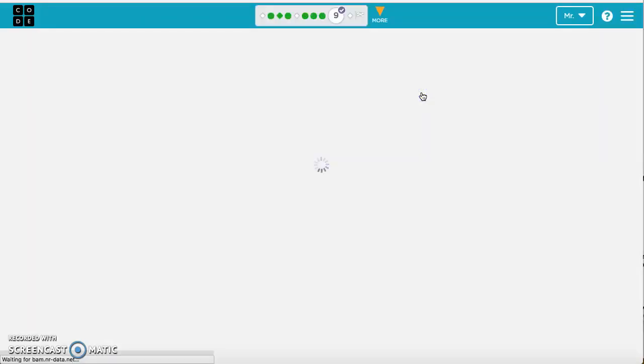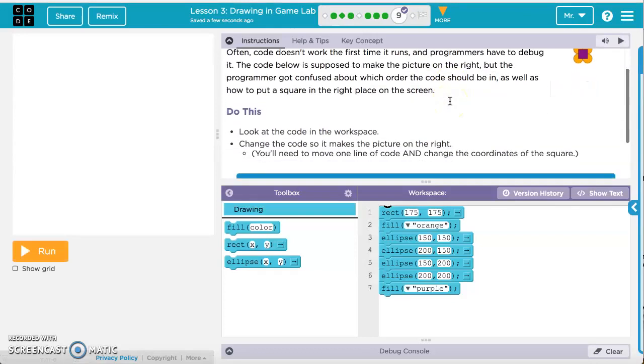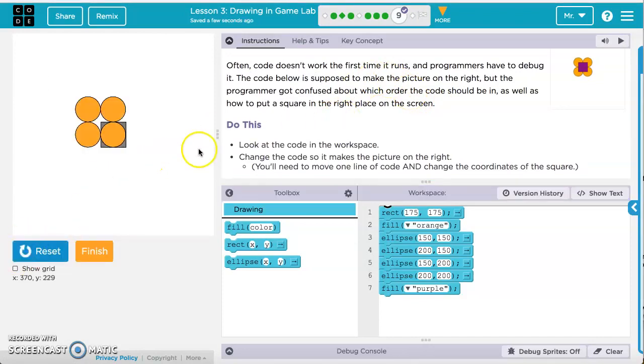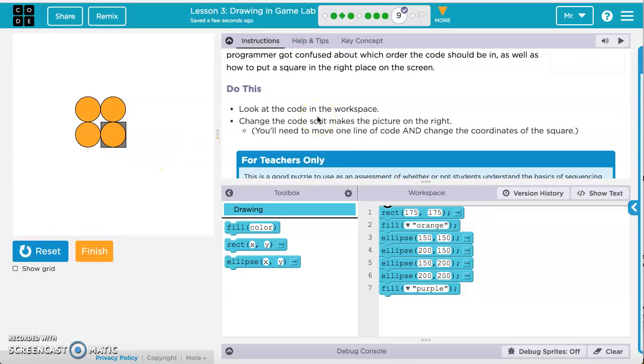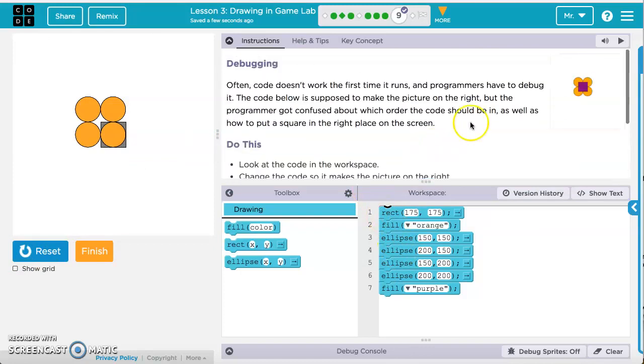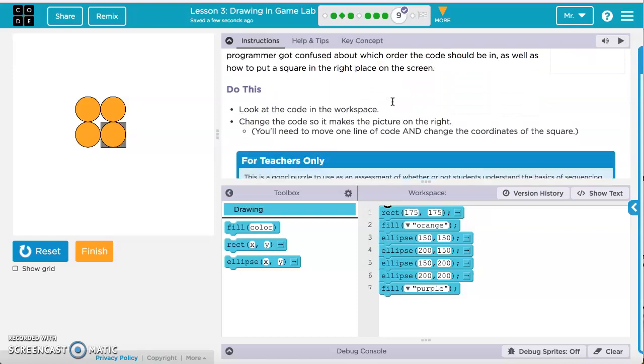Now if we move along to exercise 9, it gives us some information about how sometimes the code doesn't work as we expect it to the first time, and we'll have to debug it. So it wants us to look at the code in the workspace and change the code so that it makes the picture on the right, so that it makes this picture with the purple square in the middle of those four circles. So we'll need to adjust that.